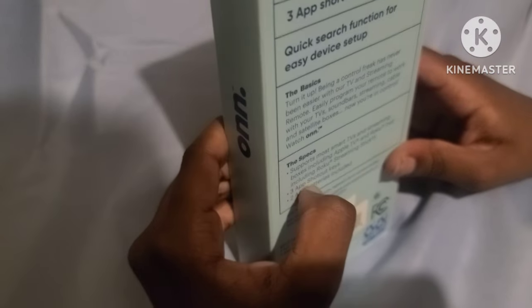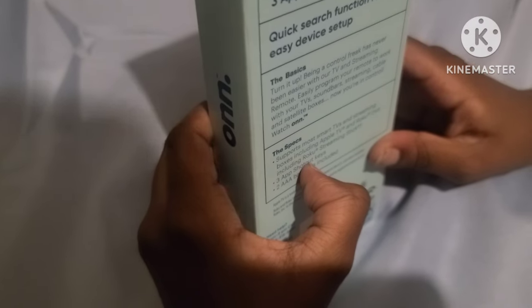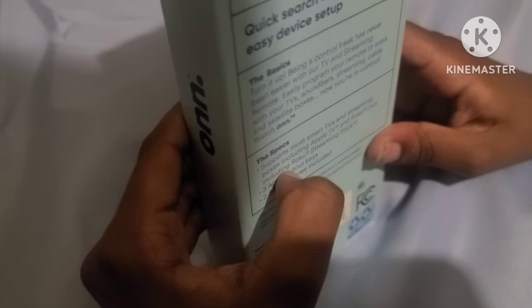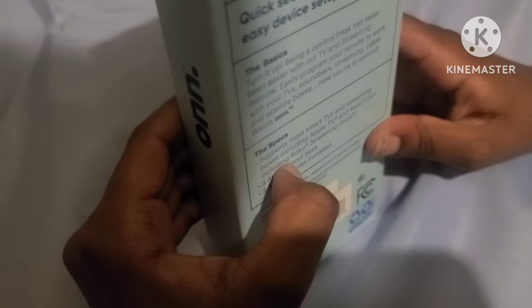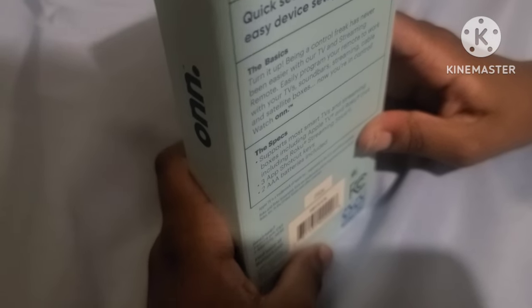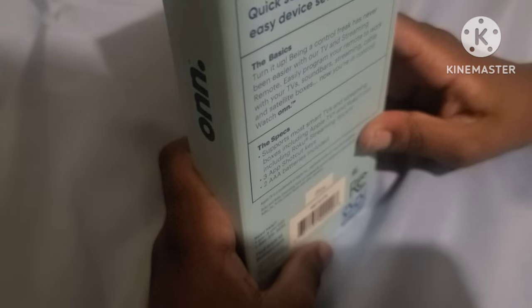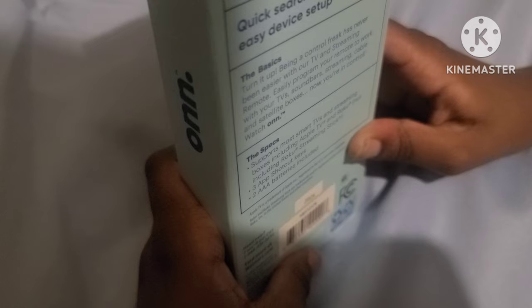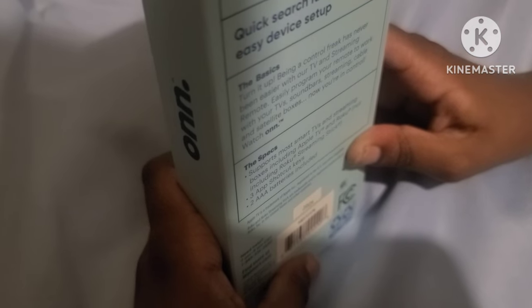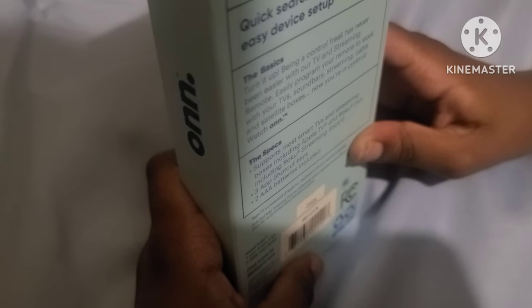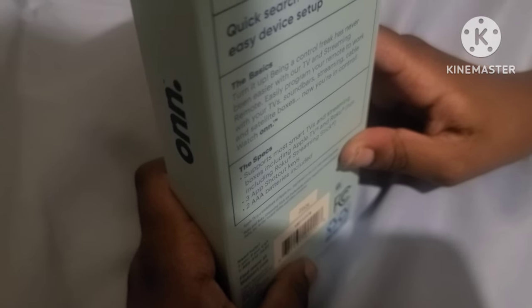Easy program your remote to work with your TV, soundbar, streaming, cable, and satellite boxes. Now you're in control. Watch On supports most smart TVs and streaming boxes including Apple TV and Roku, not including Roku streaming stick. Three app shortcut keys, triple A battery included.